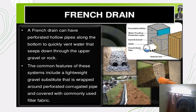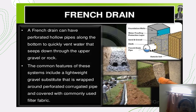Here you can see how water flows underground through the French drainage system. It consists of a waterproofing protection layer, a cloth layer, sand and gravel, and the French drainage pipe. This is how the French drainage system works.